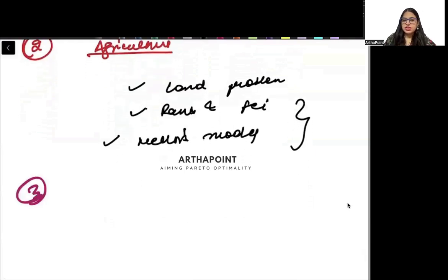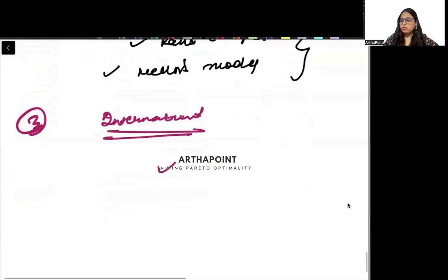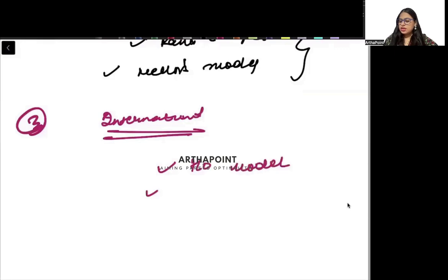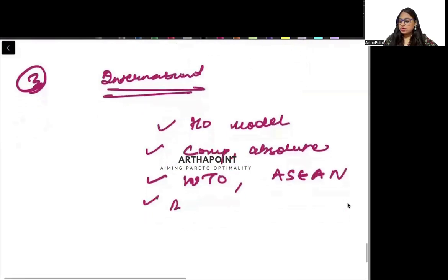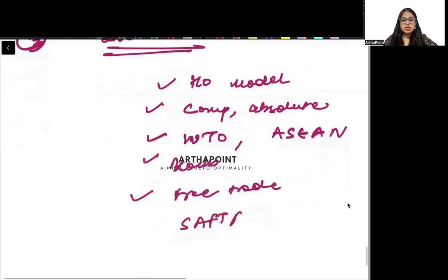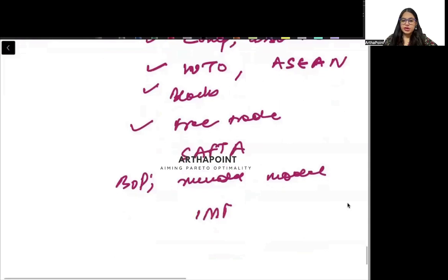The third area is International Economics, which we have covered very thoroughly. You need to talk about the Heckscher-Ohlin model, comparative advantage, absolute advantage, WTO, ASEAN, regional trading blocks, free trade, protection, SAFTA, balance of payments, Mundell-Fleming model, International Monetary Fund, and IBRD.